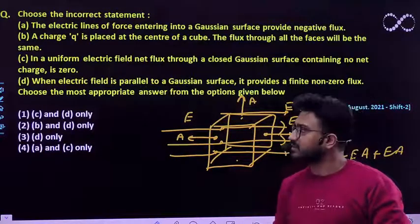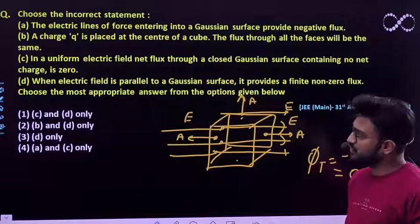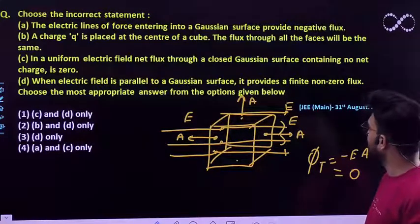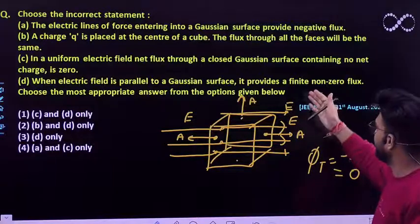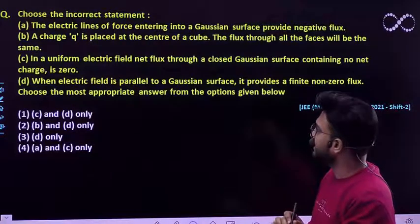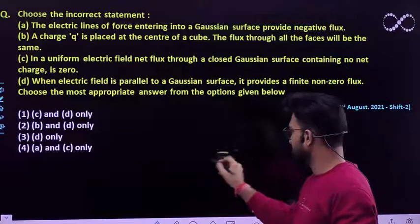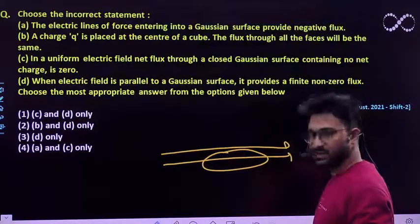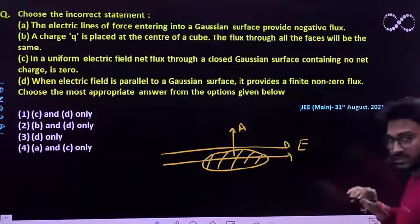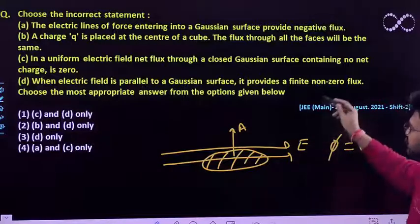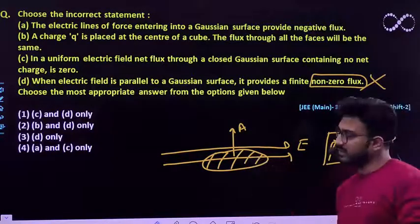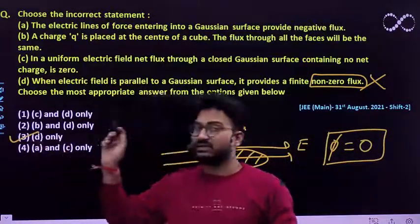As of now all three statements are true. Moving to statement D: it says when the electric field is parallel to the Gaussian surface, it provides a finite non-zero flux. If the electric field is parallel to the Gaussian surface, then the area vector of that surface must be perpendicular to the electric field. So in this situation the flux linked must be equal to zero. But statement D claims it is non-zero, which is not possible because you won't be getting any flux linked through this surface. So only statement D is incorrect; the rest are true.